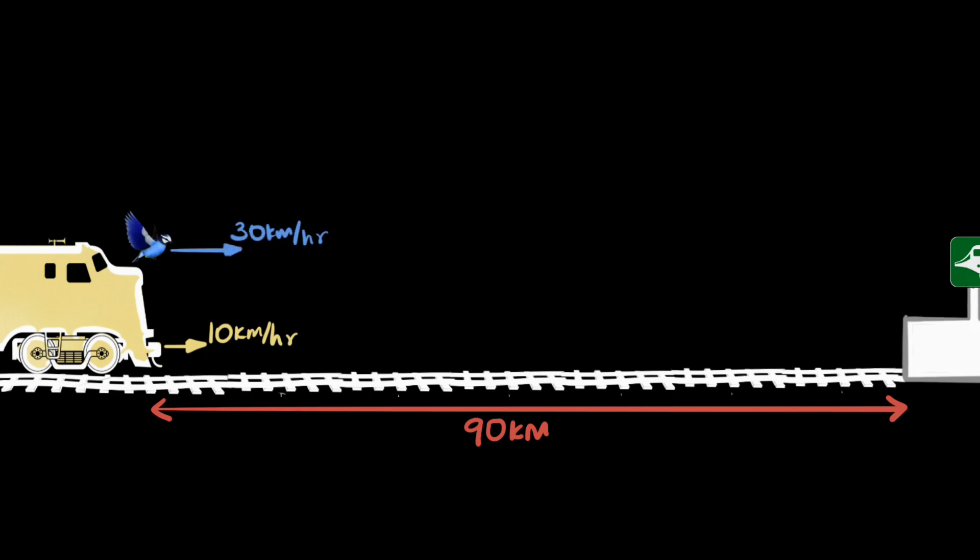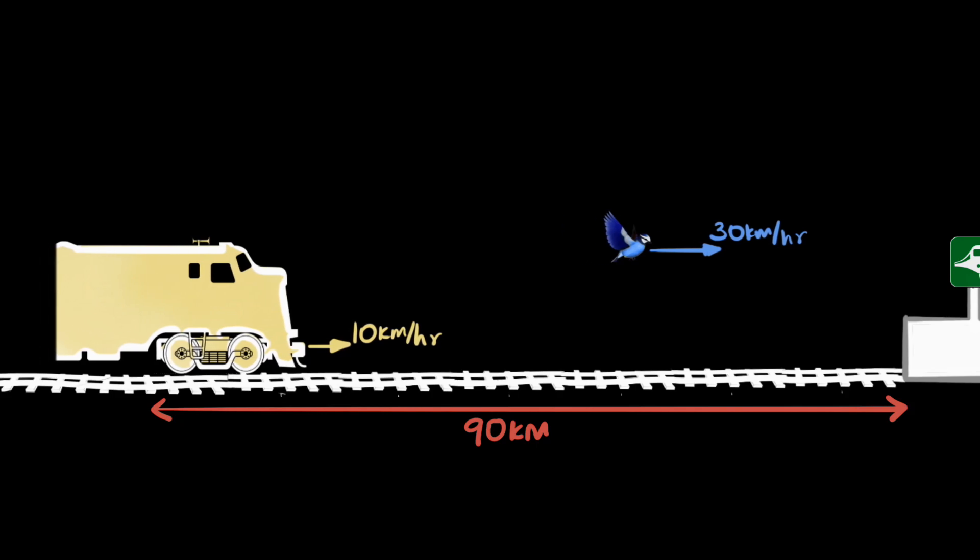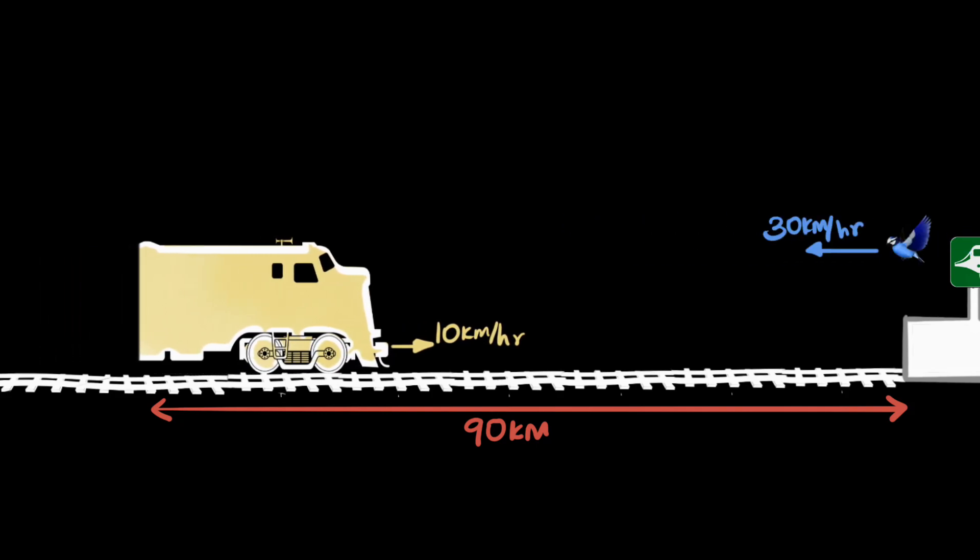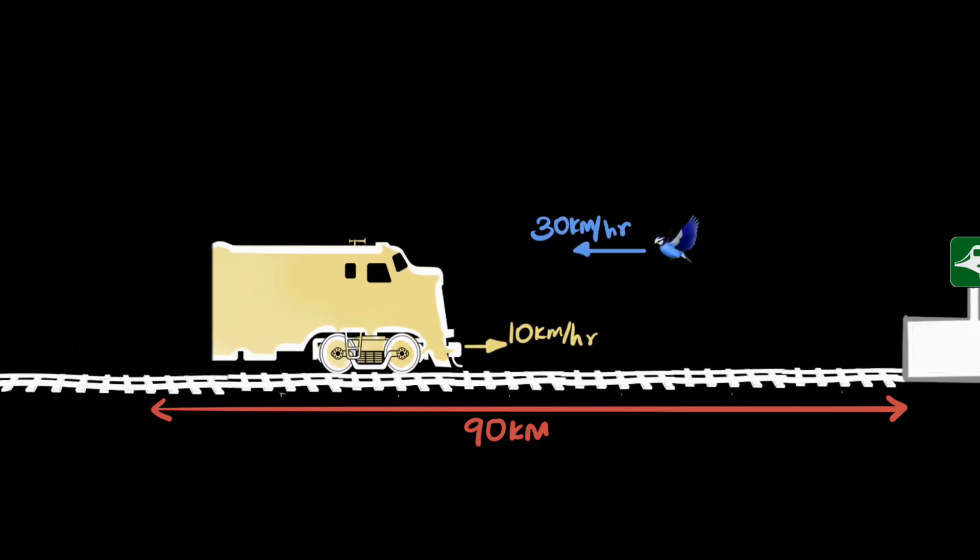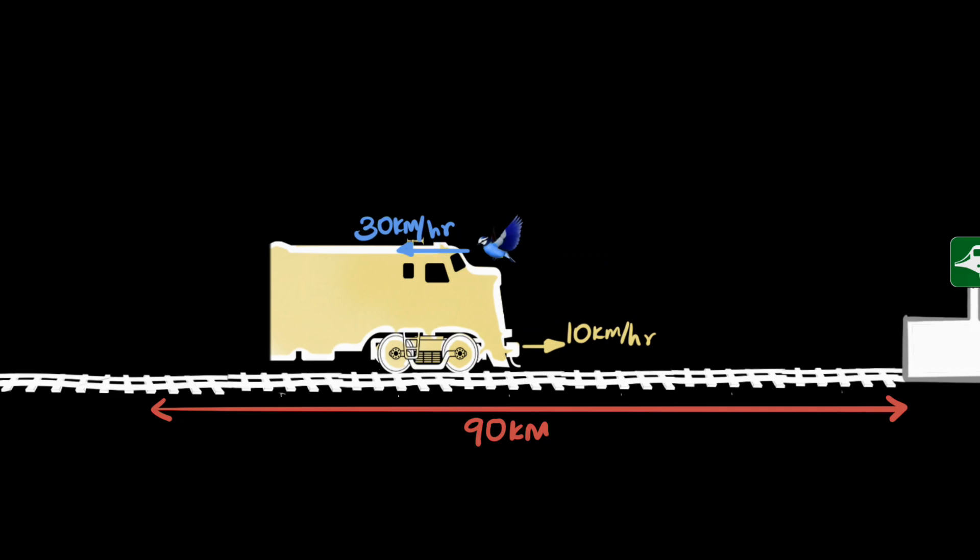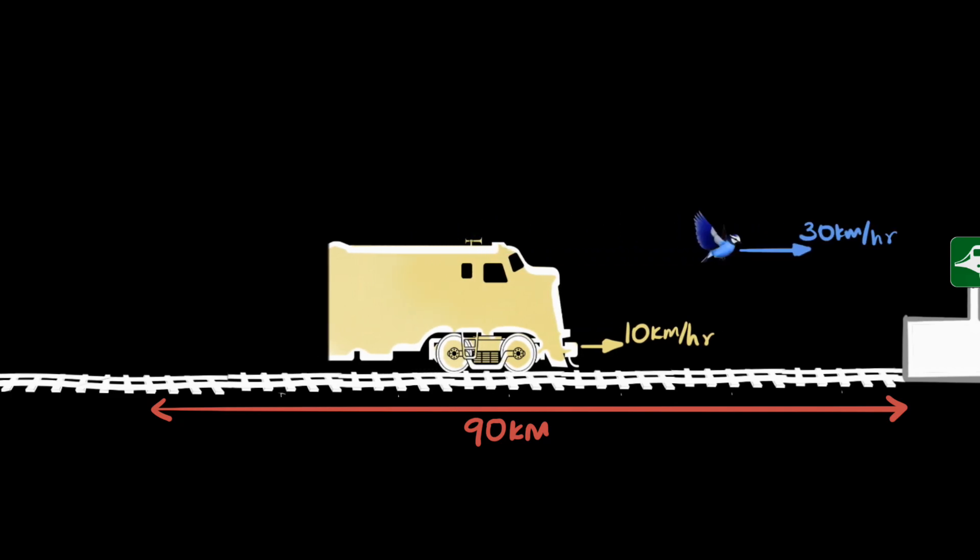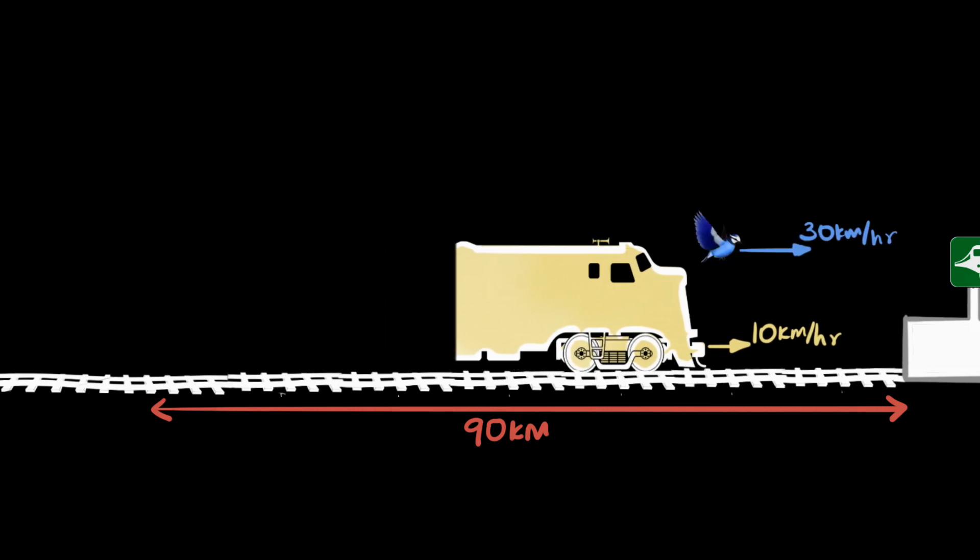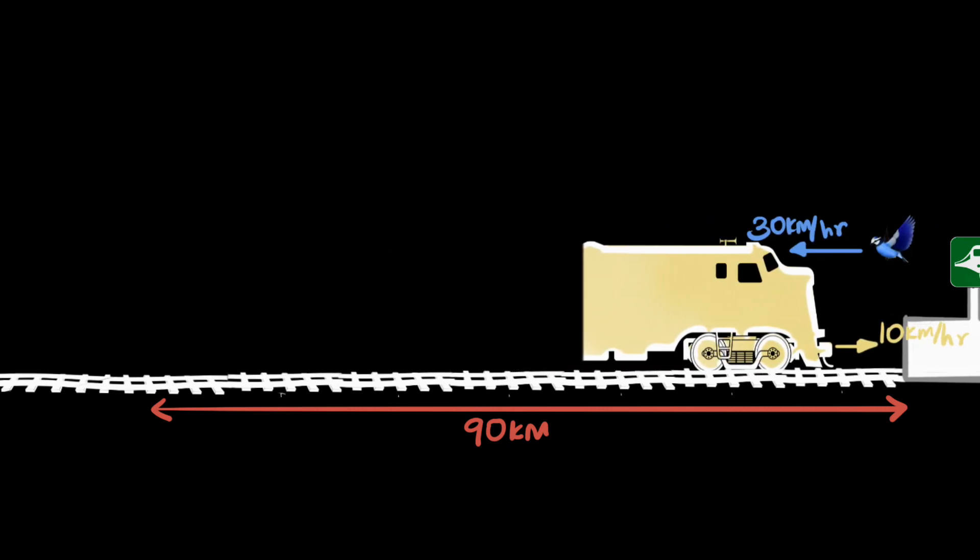For simplicity, we're gonna imagine there'll be no acceleration whatsoever. They're gonna instantly start moving together. When the bird reaches the station, it turns instantly and now starts flying back with the same speed. When it reaches the train, it's going to turn instantly and it's gonna keep doing that until the train reaches the station.